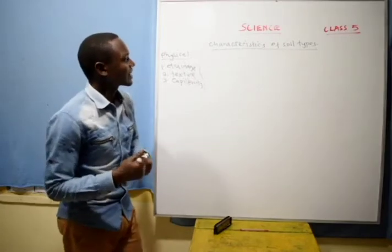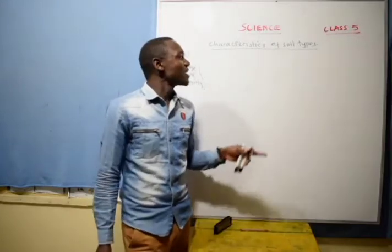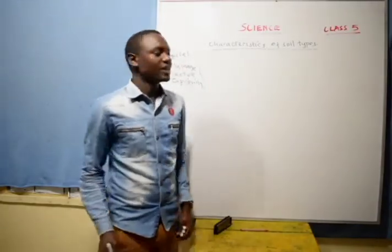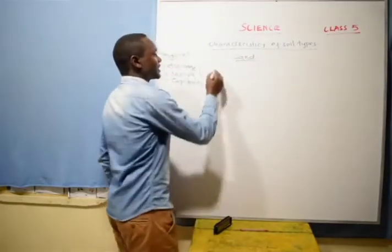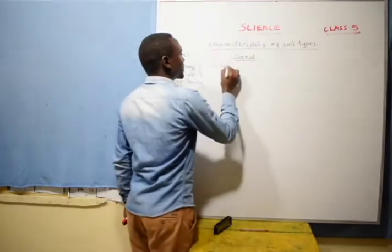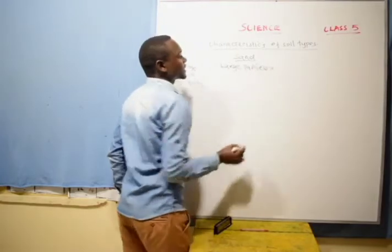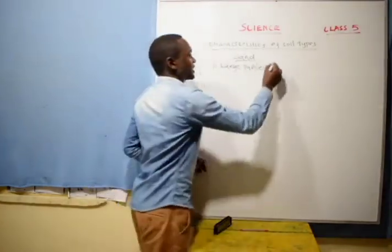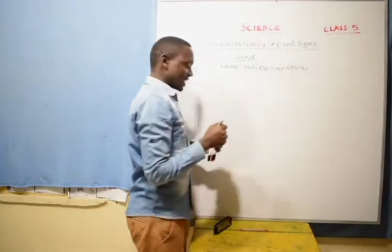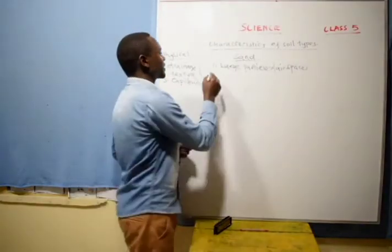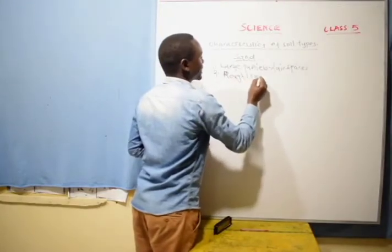Now let's look at the characteristics of the three types of soil. We have sand soil, loam soil, and clay soil. For sand soil, it has large particles, and because it has large particles, it means that it has large air spaces. If it has large air spaces, it means that it has a rough or coarse texture.